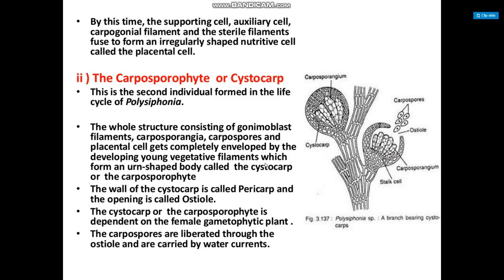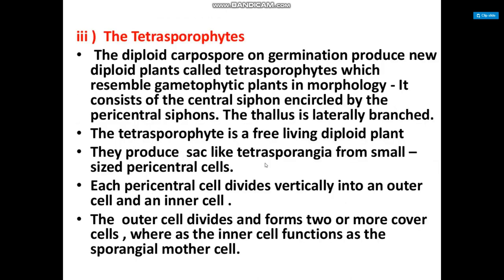The wall of the cystocarp is called the pericarp, and the opening is called the ostiole. The carposporophyte is dependent on the female gametophytic plant. Carpospores are liberated through the ostiole and are carried by water current.